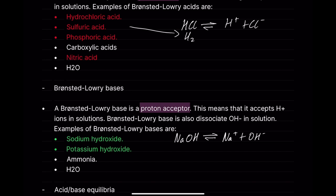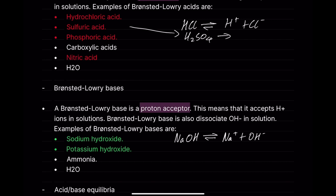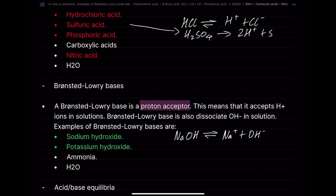Sulfuric acid, H2SO4, technically goes through a first step to HSO4− plus H+, but in reality it goes all the way to completion: SO4²− plus 2H+. This makes it a diprotic acid because it dissociates two H+ ions in solution.